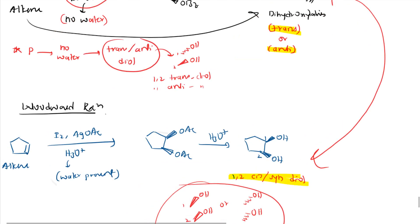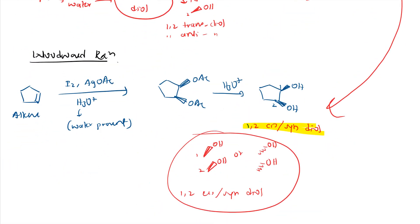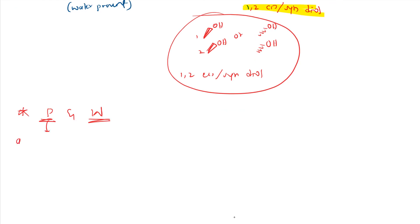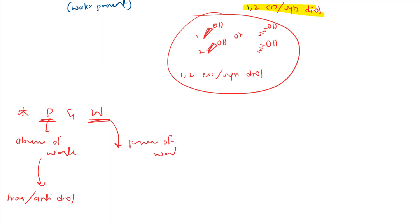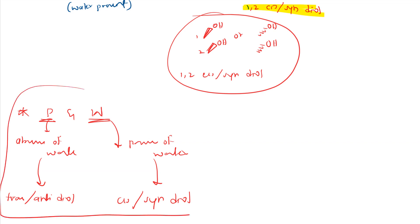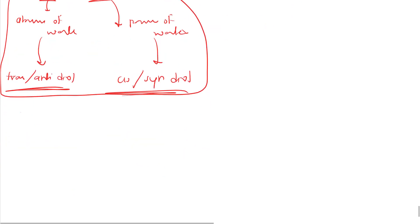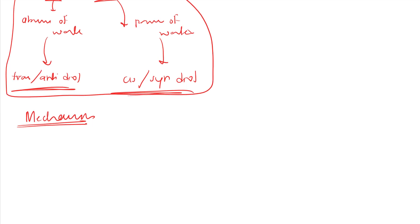The difference is: Prevost gives anti or trans diol, Woodward gives cis or syn diol. To remember: P comes before W alphabetically. Prevost — absence of water, alkene converts to trans/anti diol. Woodward — presence of water, alkene converts to cis or syn diol. The mechanism will explain why Prevost gives anti and Woodward gives cis.